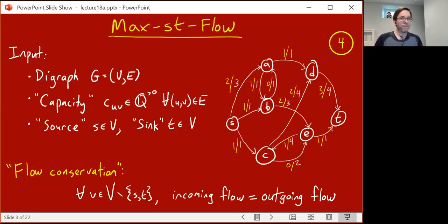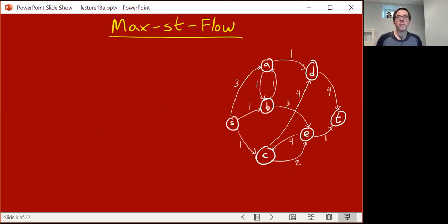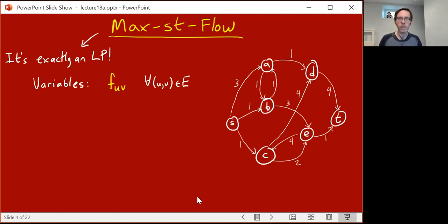The great thing about this problem, max-st-flow, is it's literally exactly an instance of the optimization version of the linear programming problem. Let's see why that's true. In the linear programming problem, we have variables. In this problem, max-st-flow, we're going to have a variable called f_uv, one for every directed edge uv in the graph. This is supposed to represent the amount of flow along that edge, the amount of stuff being shipped along that edge.